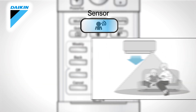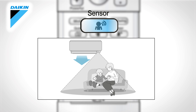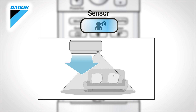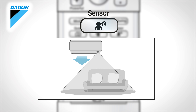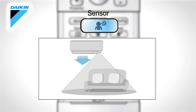Movement sensor. Press the sensor button to start the infrared sensor, which will detect human movement. If no one is in the room for more than 20 minutes, the operation automatically changes to energy saving operation. Press once more on the button to cancel the operation.